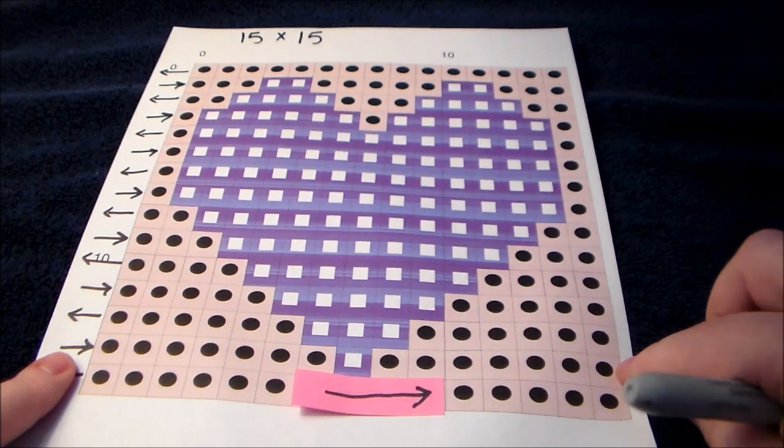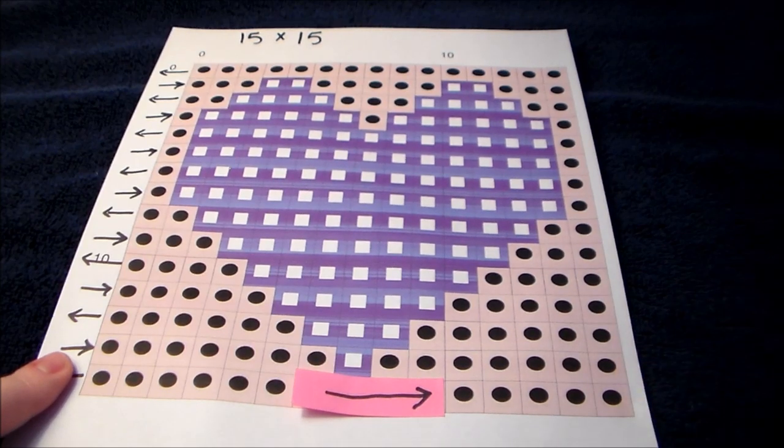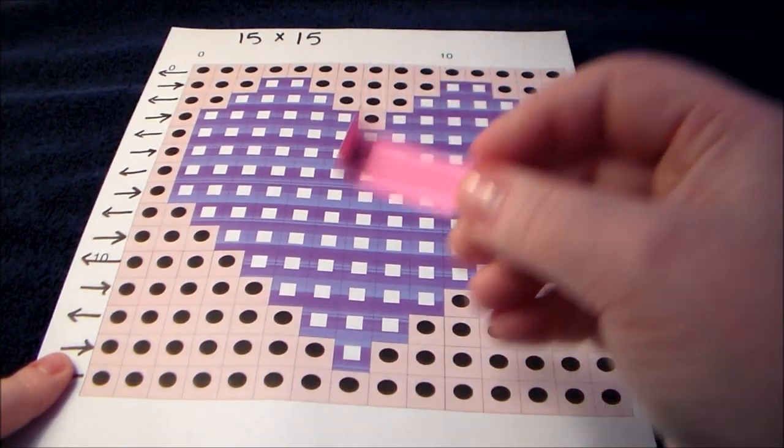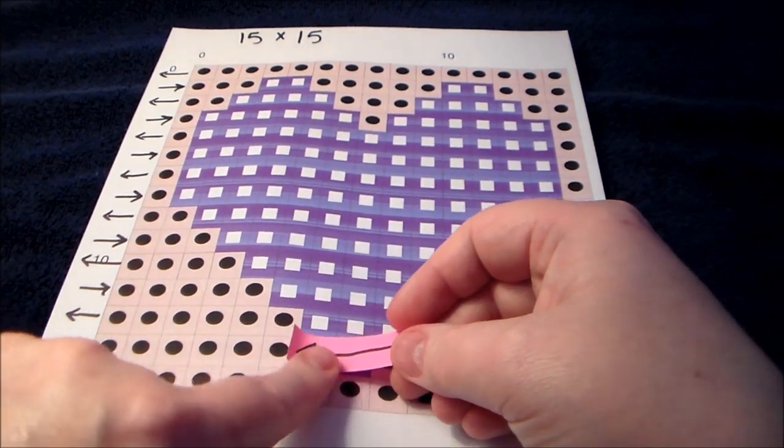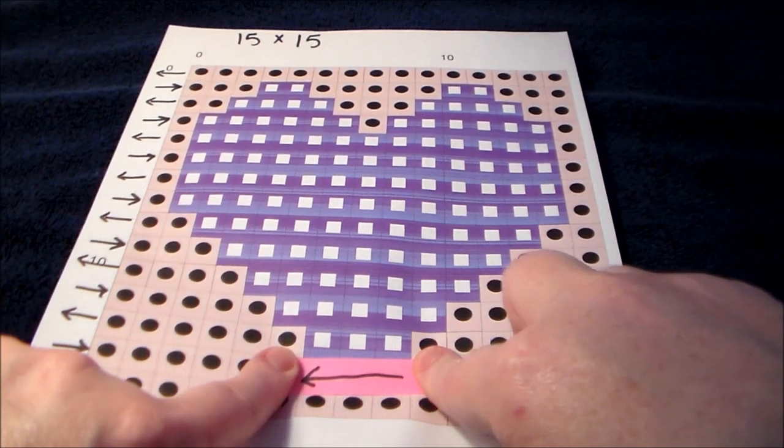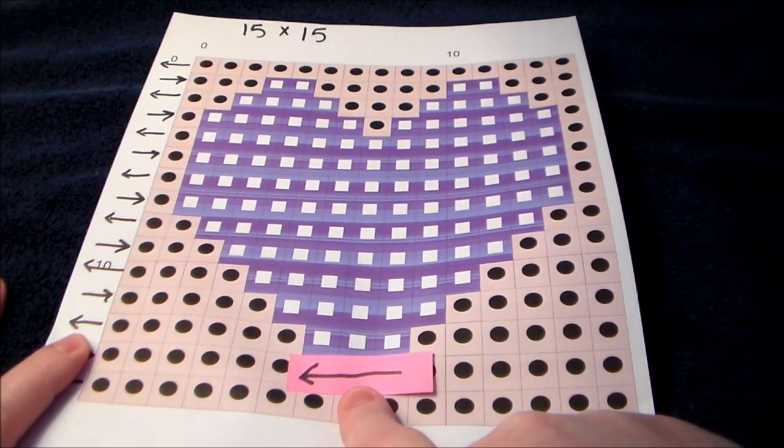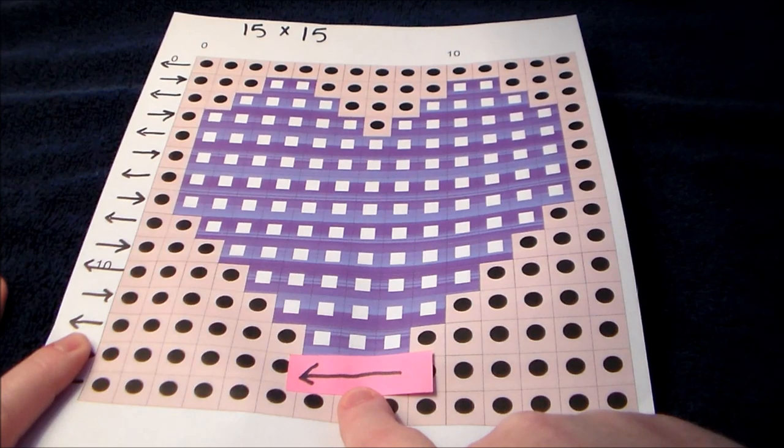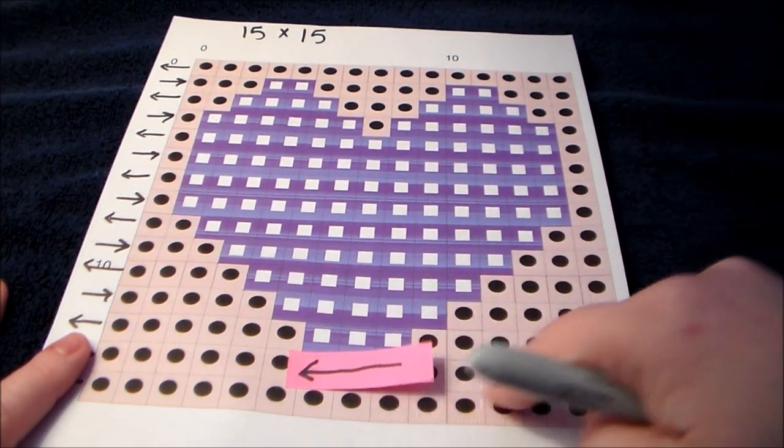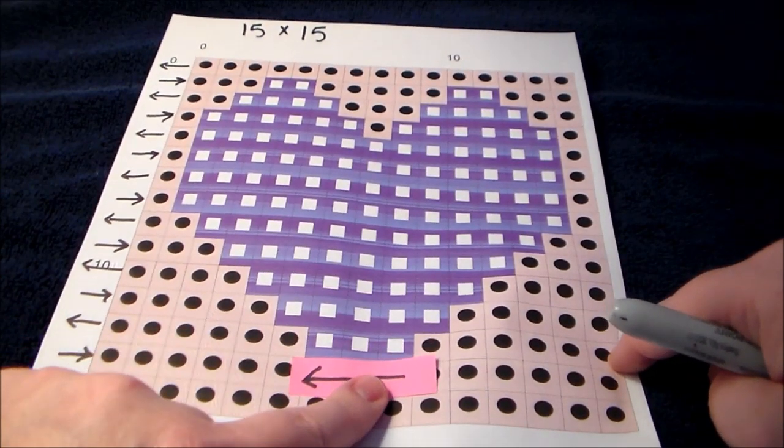So after we finish row two again, we will chain one and turn. So we will pick up our little arrow and we will turn it and cover up the row we just did. So now that leaves row three we're working on and we are going right to left. So now we have chained and turned. So now we are going to work from right to left on row three.